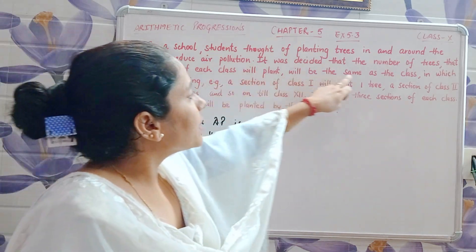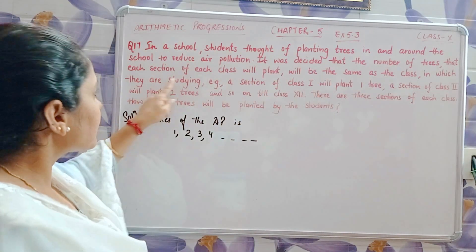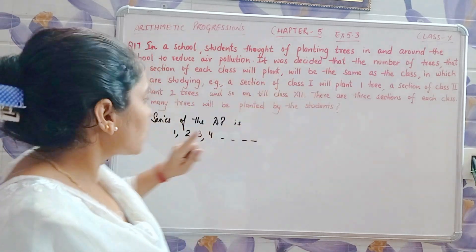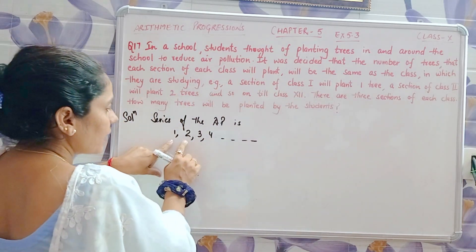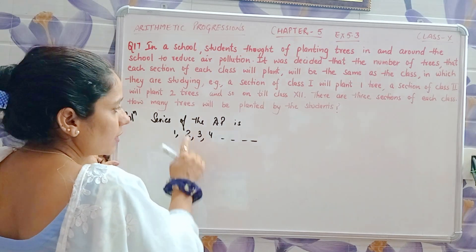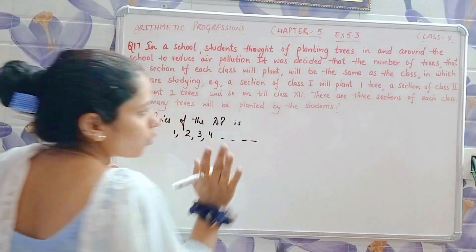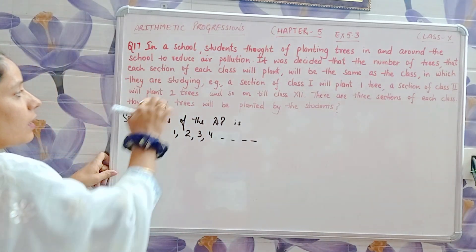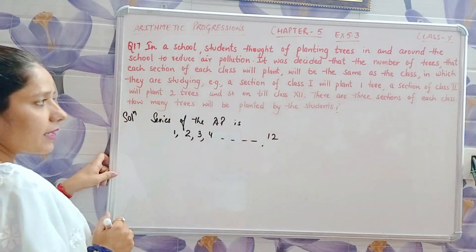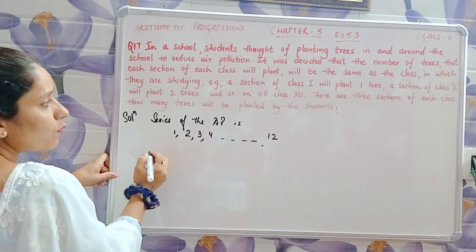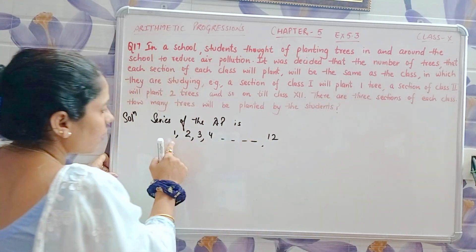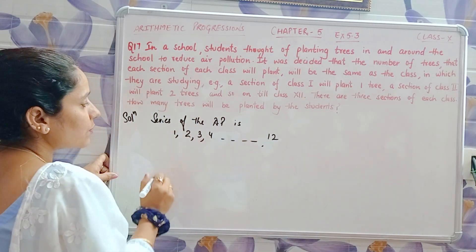The number of trees each class plants is the same as the class number they are studying in. So class 1 plants 1 tree, class 2 plants 2 trees, class 3 plants 3 trees, class 4 plants 4 trees, and so on. The last term is 12, meaning it goes up to class 12. We need to find the total number of trees.